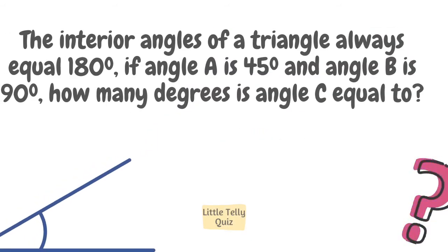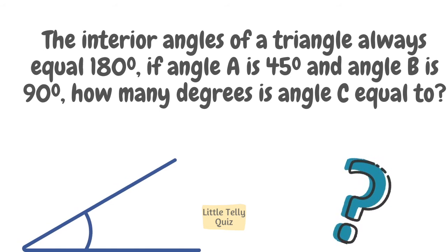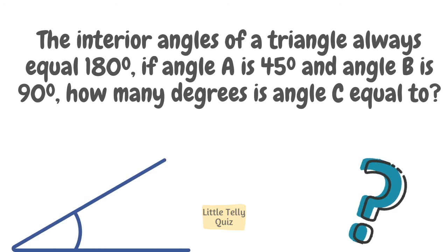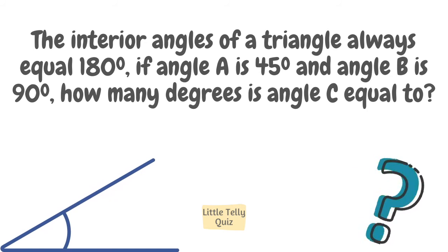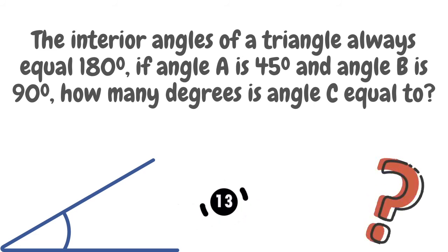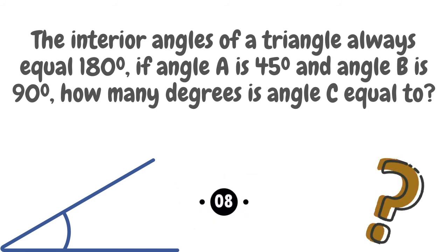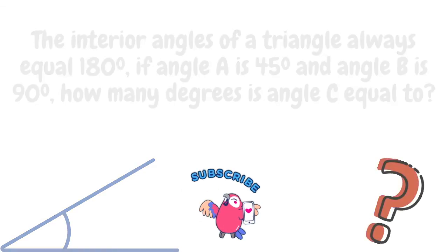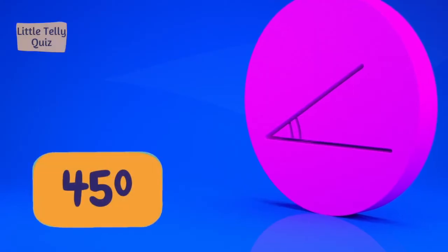The interior angles of a triangle always equal 180 degrees. If angle A is 45 degrees and angle B is 90 degrees, how many degrees is angle C equal to? The answer is 45 degrees.